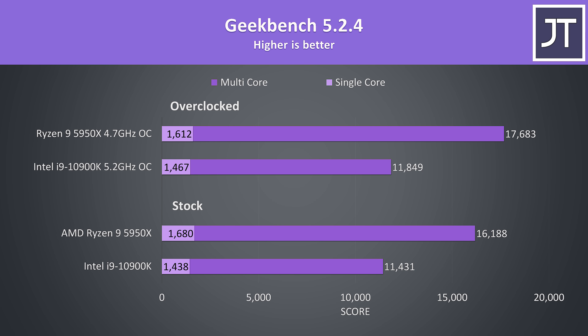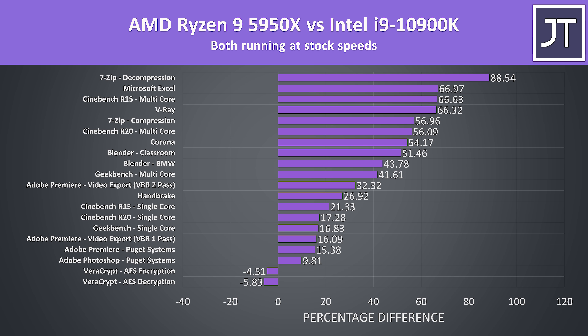Like most other single core tests, the 5950X was ahead of the 10900K in Geekbench, scoring 17% higher at stock — impressive given that last year the 10900K was 9% ahead of the 3950X. The multicore difference is of course much larger due to the extra 6 cores of the 5950X, which allowed it to reach a 42% higher score at stock. Here's how these two processors compare in all applications tested at stock.